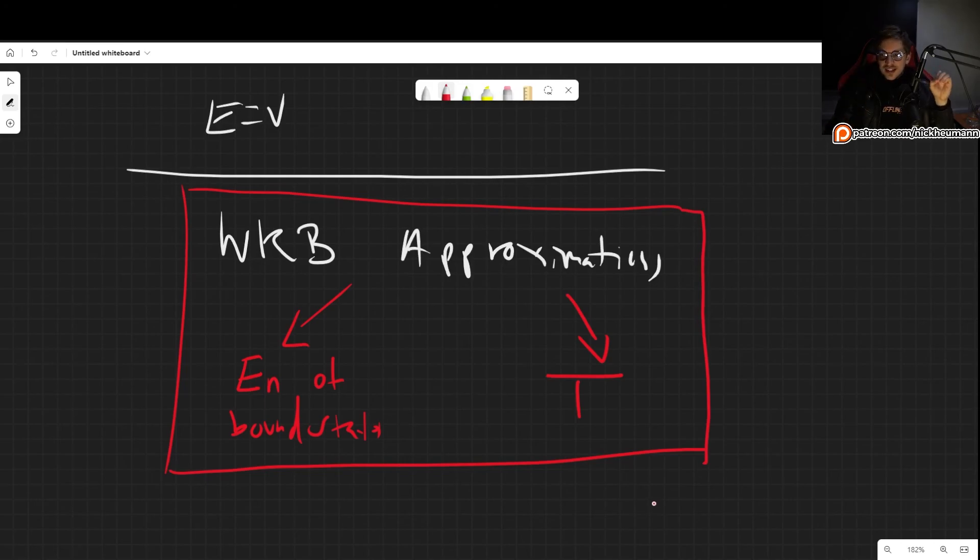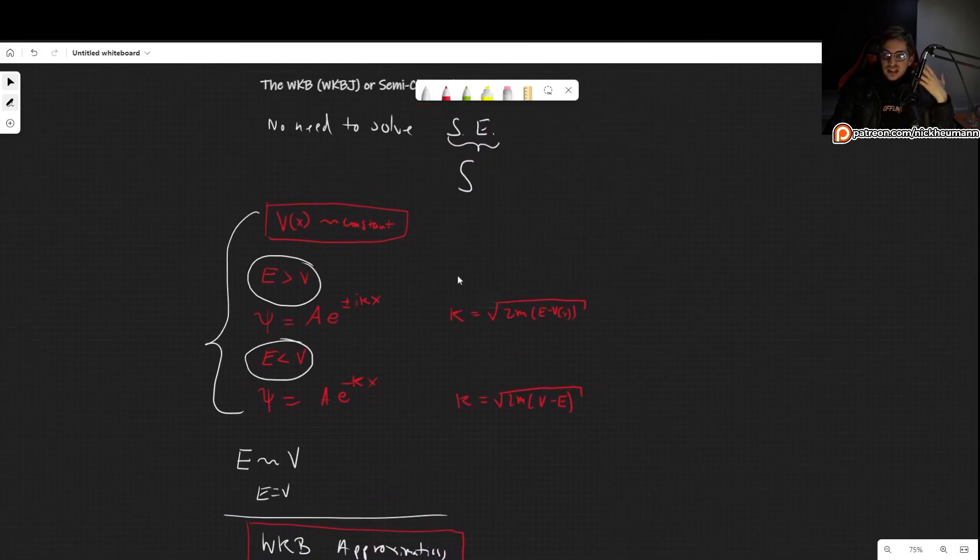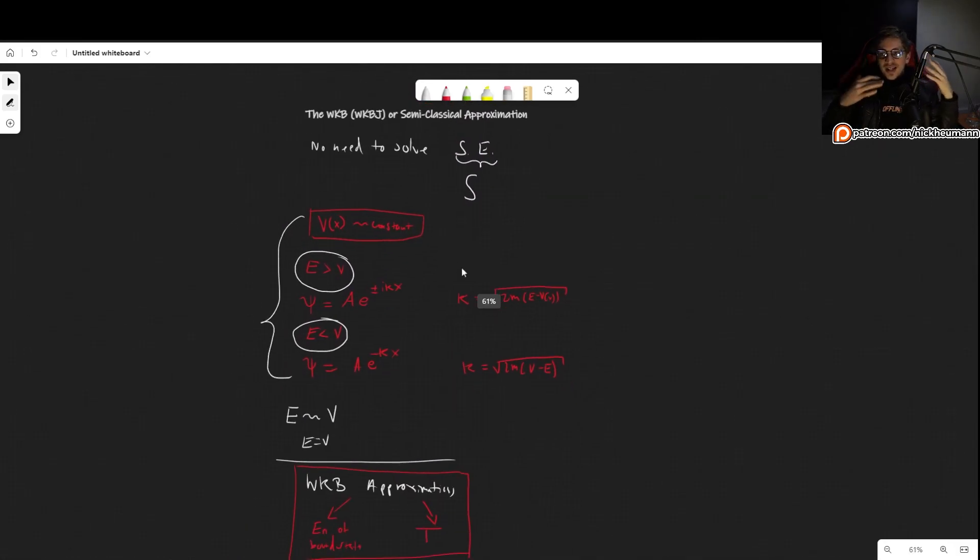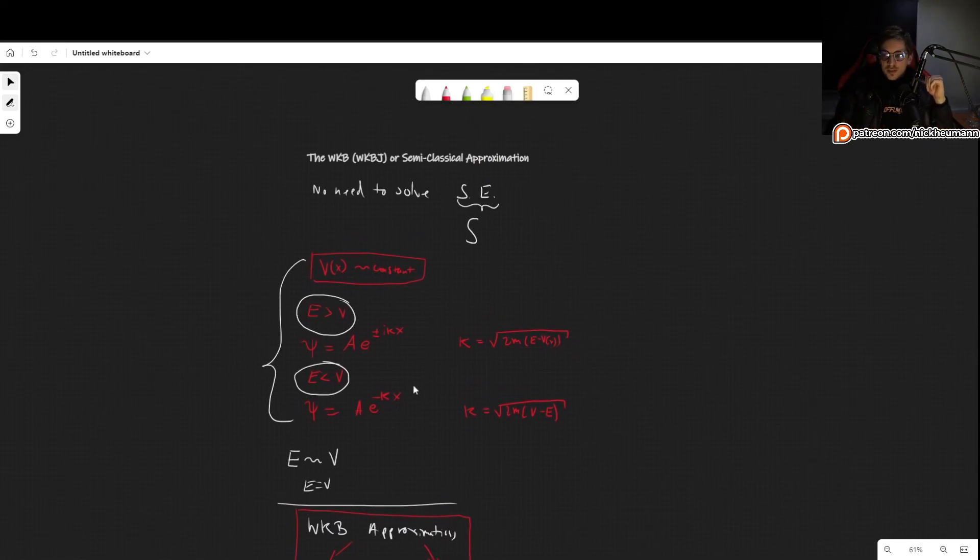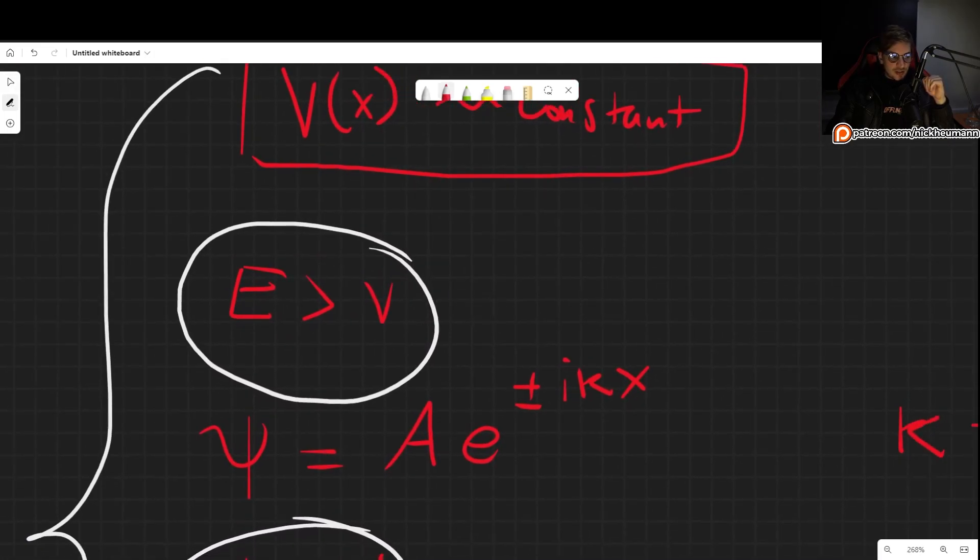So, this is just a very quick overview of what the WKB approximation is, right? At least, what its objective is. Of course, we haven't really gone into details of how to work with it. But in the next video, we will already begin working with the first case, where the energy is greater than the potential. So, I hope this video was useful to you. I'll see you in the next one. Thank you very much for watching.